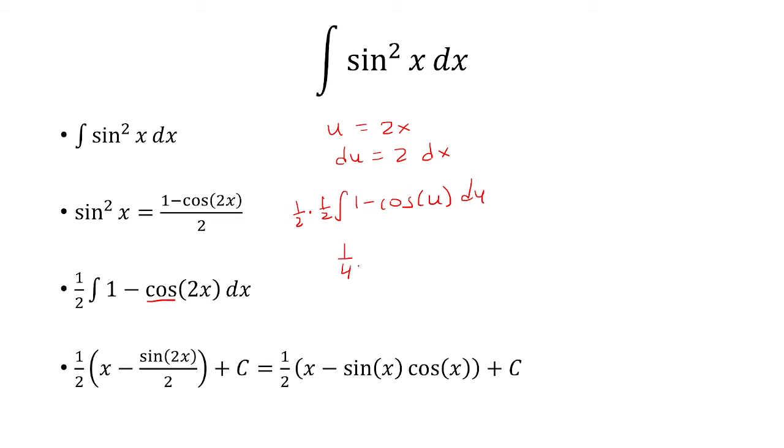And so we have 1 fourth integral 1 minus cosine of u du, which is 1 fourth u minus sine u. Or u we said was 2x, so it's 2x minus sine 2x.